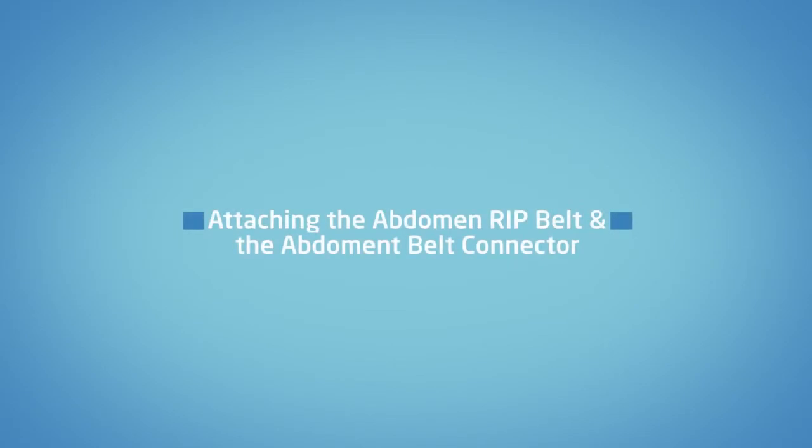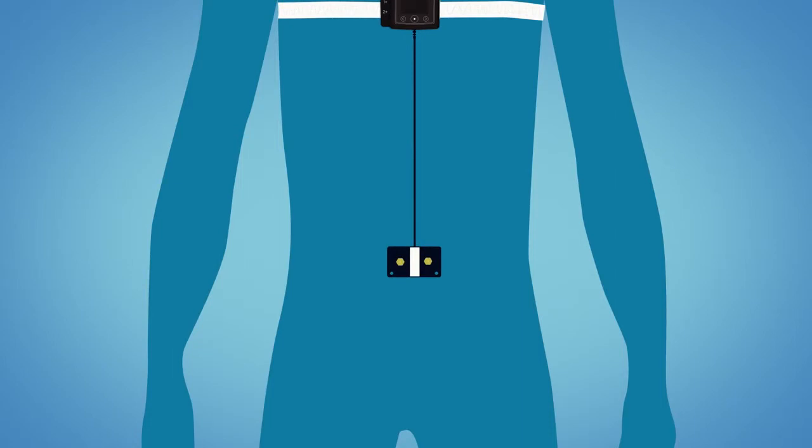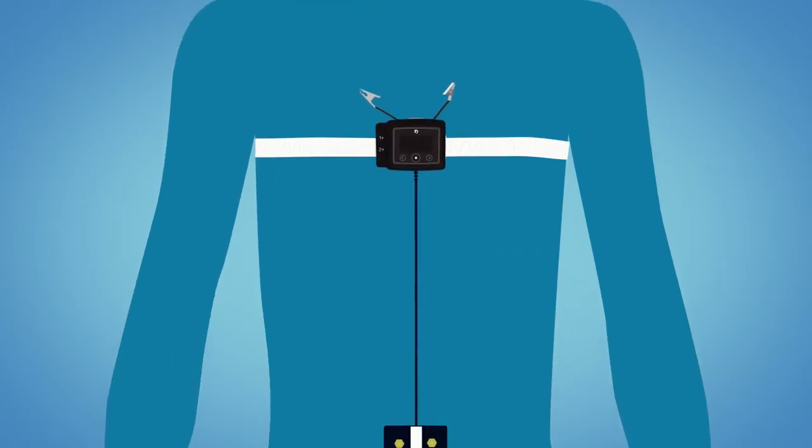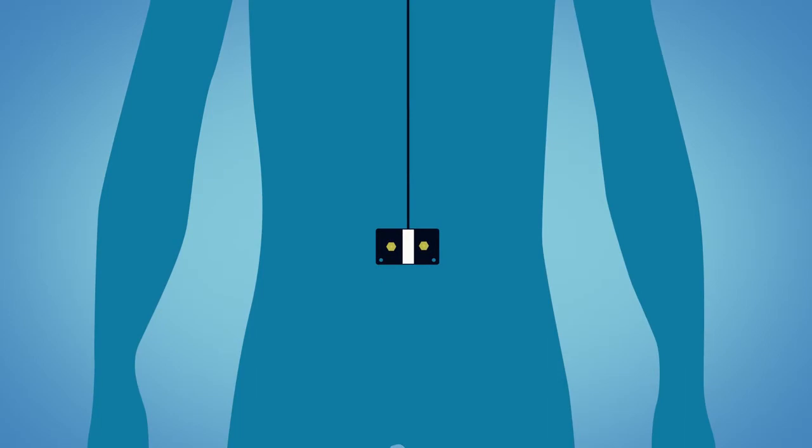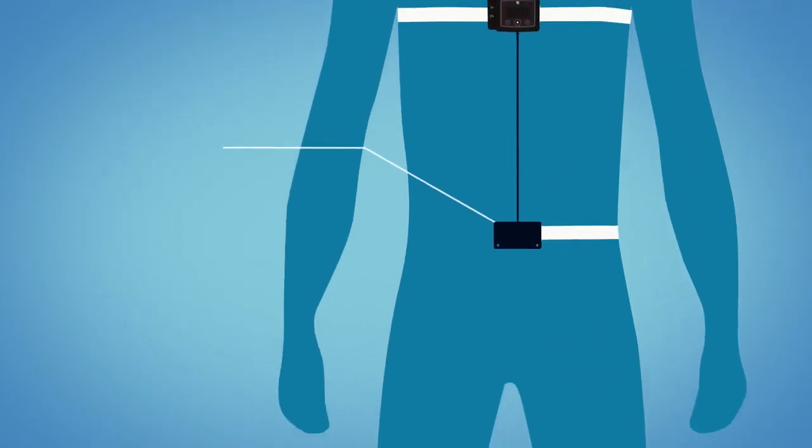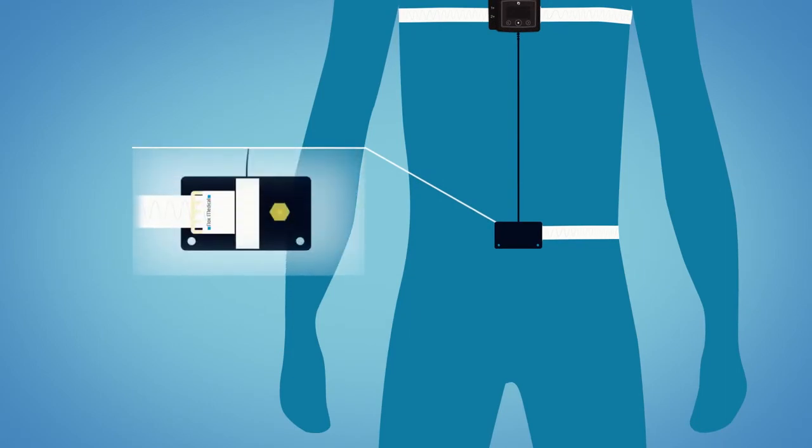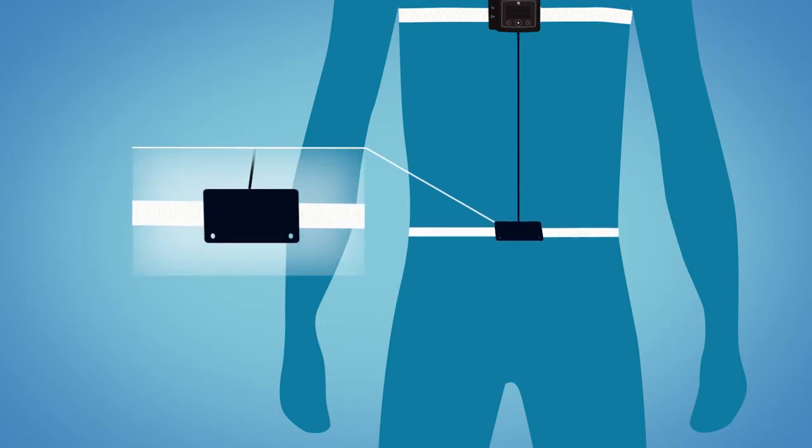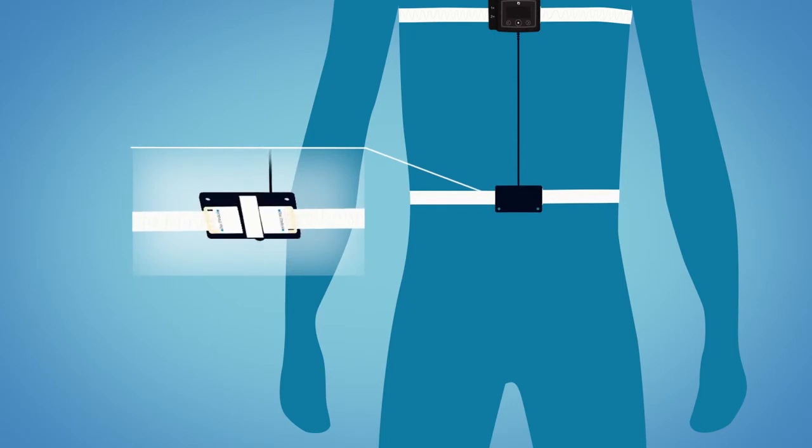Attaching the abdomen rib belt and the abdomen belt connector. The abdomen belt is connected to the abdomen belt connector that hangs directly down from the T3 device. Be sure the flat side of the abdomen belt connector is facing away from you. Take the second belt and snap one end of the belt to one of the connectors on the abdomen belt connector. Arrange the belt around your back and snap the other end to the lone connector over your abdomen. The abdomen belt should be above your belly button.